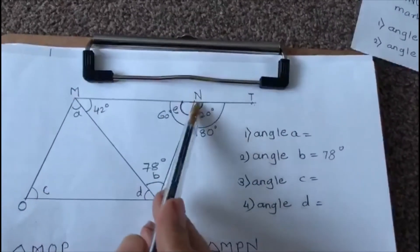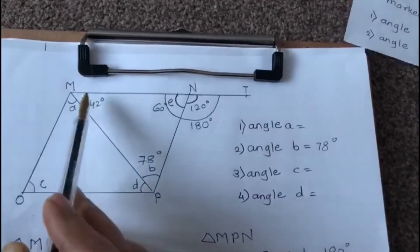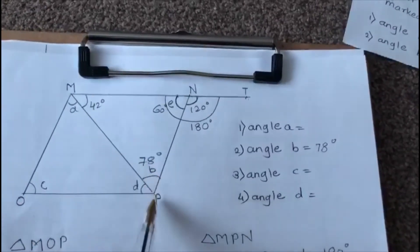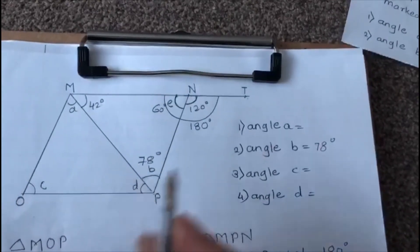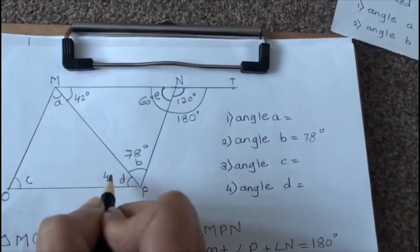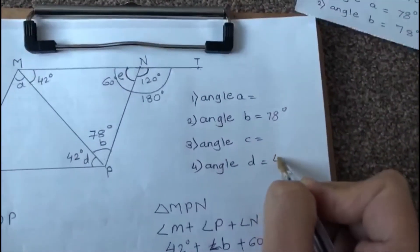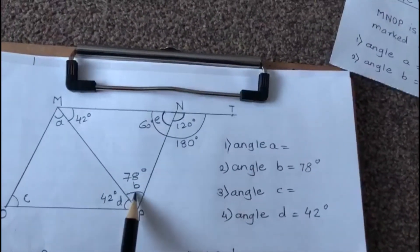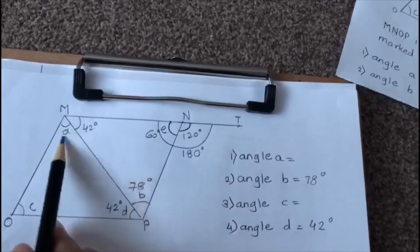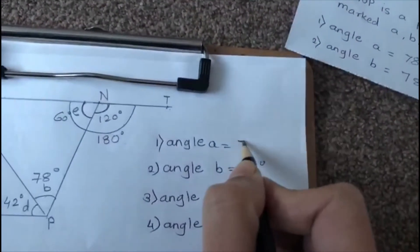Angle PMN and angle MPO are opposite angles, and opposite angles in a parallelogram are always equal. So if angle PMN is 42 degrees, then angle MPO is also 42 degrees, meaning angle D is also 42 degrees. And since we have angle B at 78 degrees, angle B and angle A are opposite angles, so angle A is also 78 degrees.